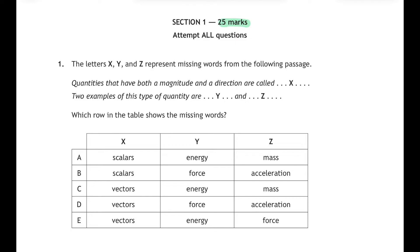Question one: the letters X, Y, and Z represent missing words from the following passage. Quantities that have both a magnitude and a direction are called—well, that's vectors. So I'm going to highlight vectors under column X in the answer there. And then two examples of this type of quantity are Y and Z. Now there's only five types of vectors you need to know about for National Five physics, and they are displacement, velocity, acceleration, force, and weight.